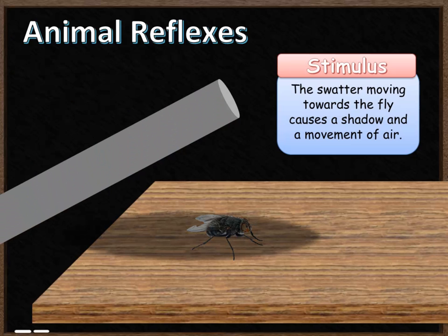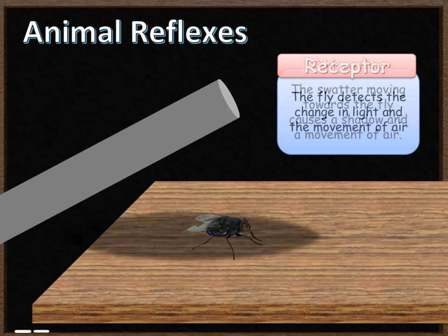The movement of air from the swatter is also detected by the fly. That stimulus is detected by receptors on the fly. The light change — the shadow — is detected by light receptors in the fly's eye, and the movement of air is detected by hair cells on the skin of the fly.